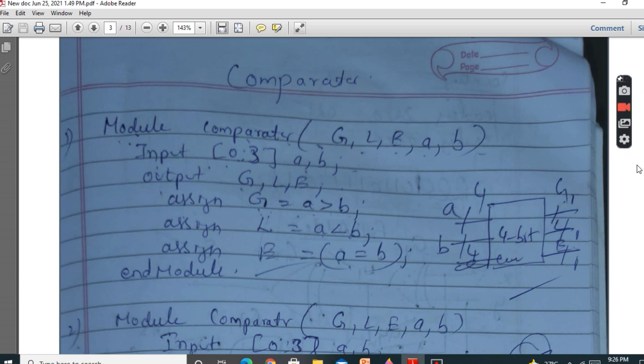In this video, we will see how to write Verilog proof of a comparator. This is a 4-bit comparator. So this is the block diagram. It is having 4 bits.